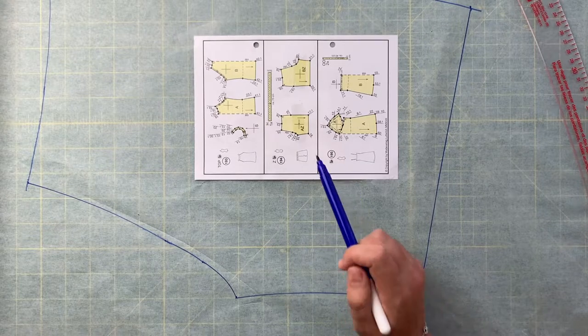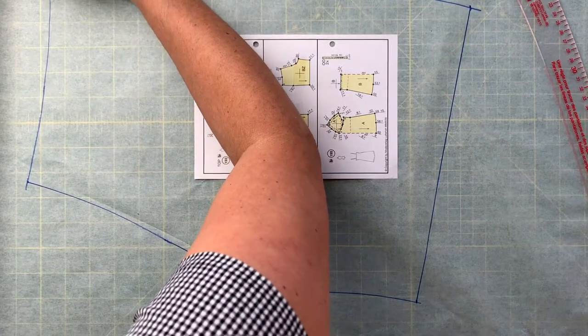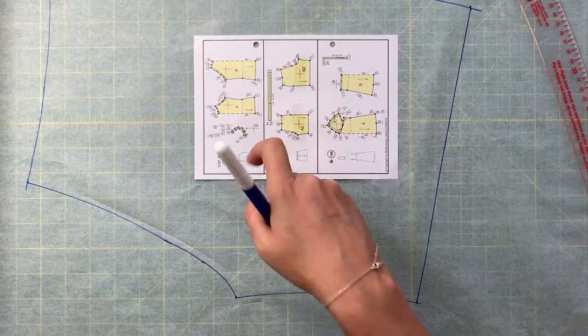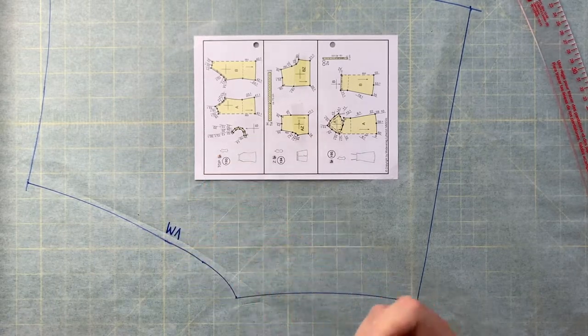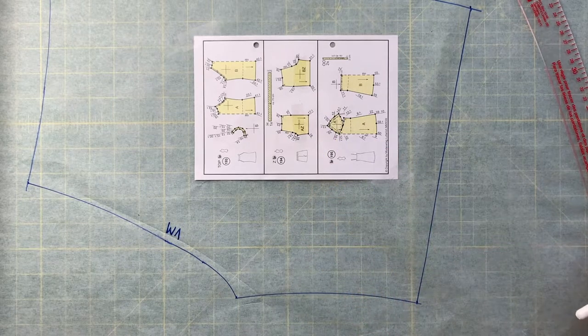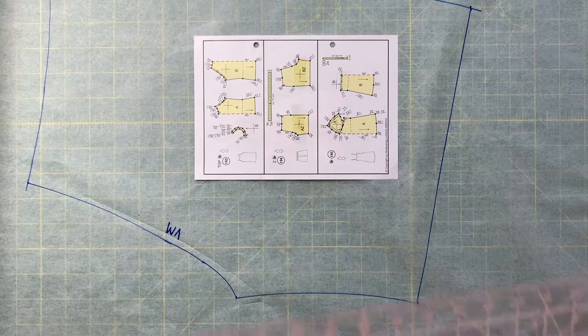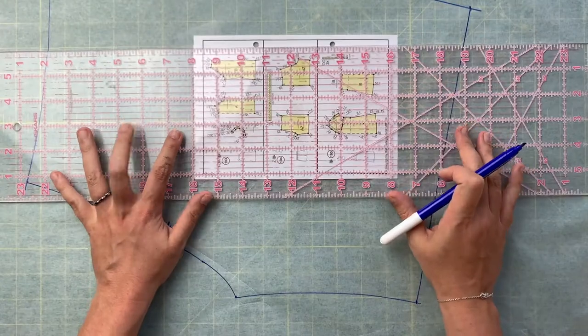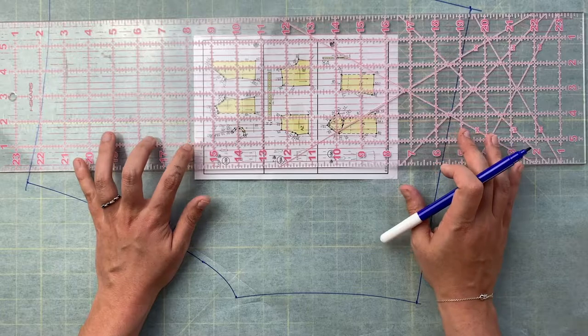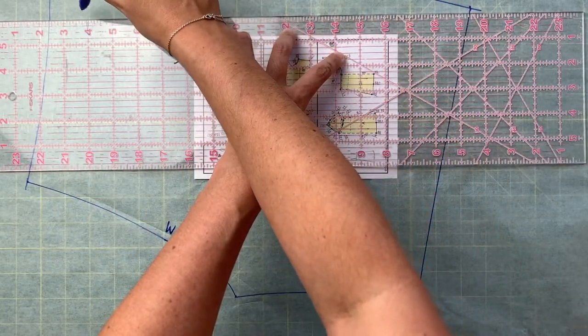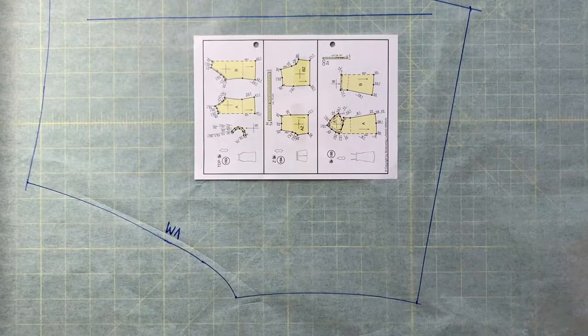Now we do want to transfer a couple of things. If you see any lettering, you want to put that in there. So we've got an A over here, and then over here we've got a VM. VM denotes center front, and then we've also got a grain line. I'm going to take my clear ruler and draw out that grain line because the grain line on the pattern piece is completely straight. We just want to draw that out here to reflect the correct grain line for when we go to cut our fabric.